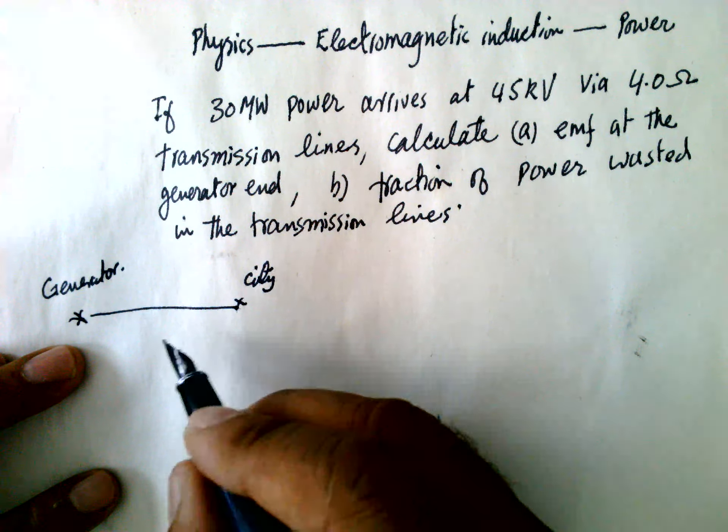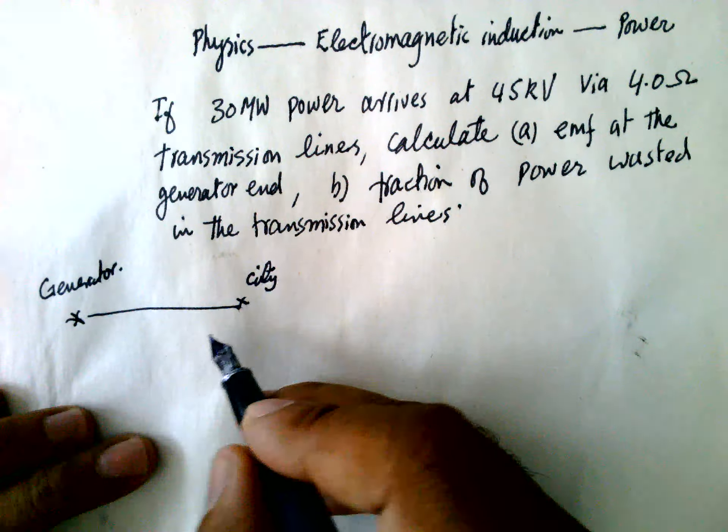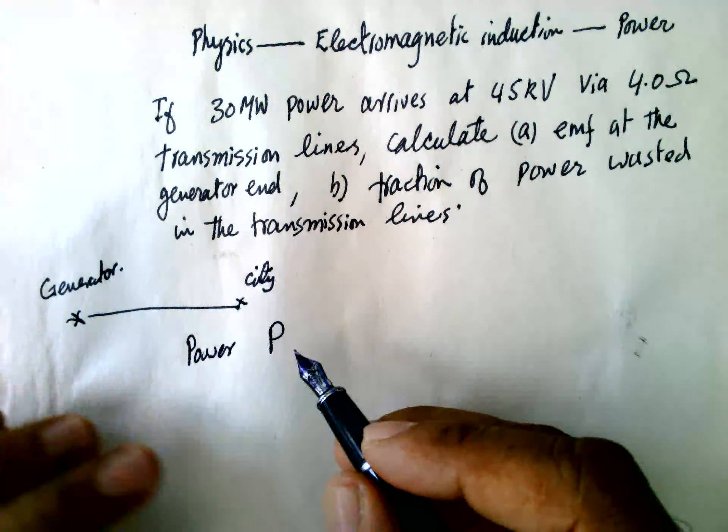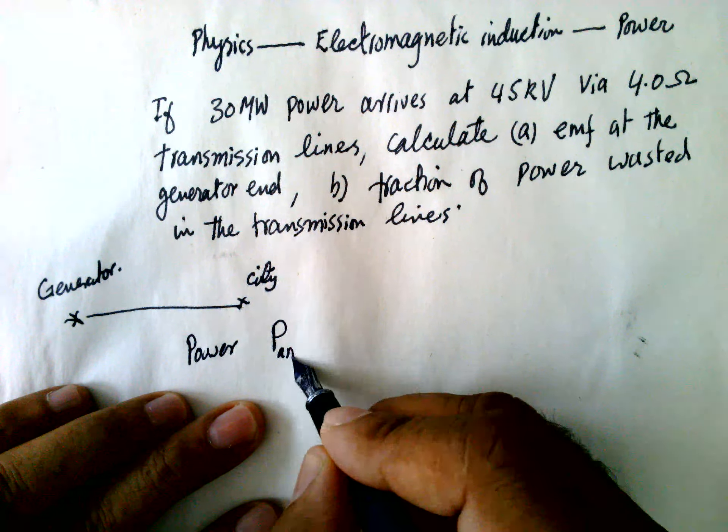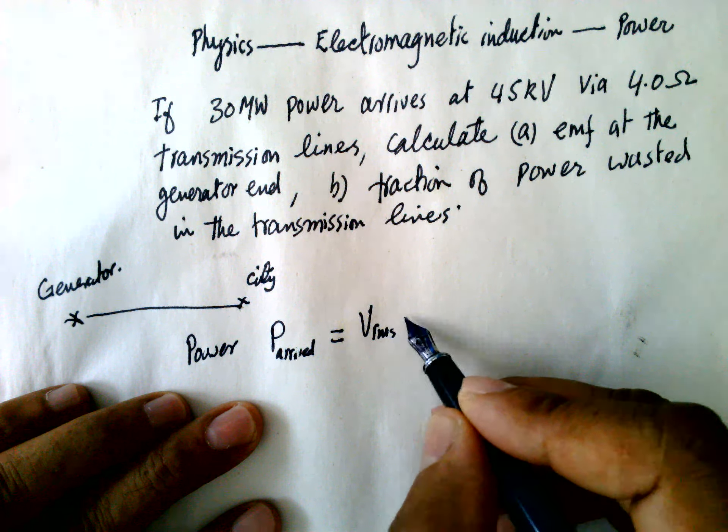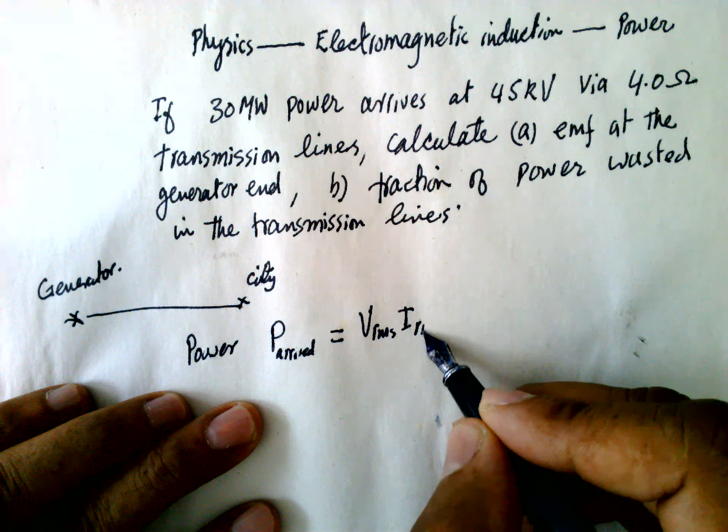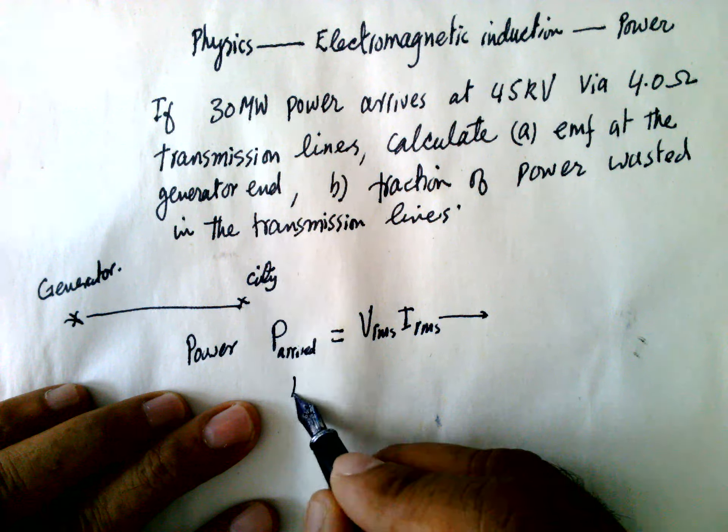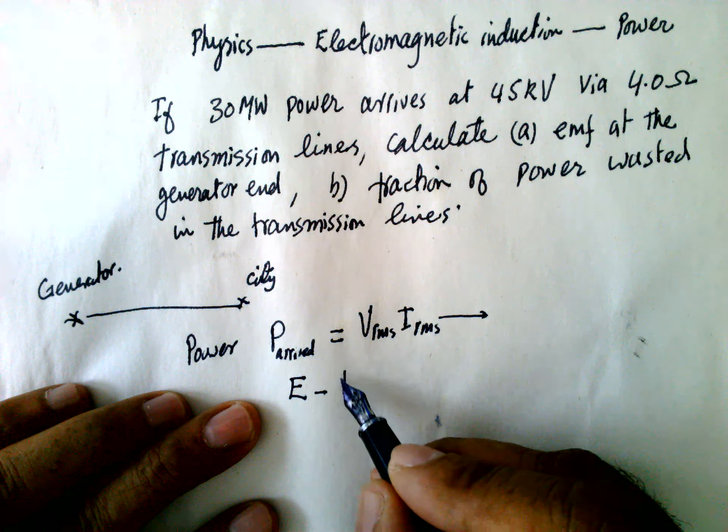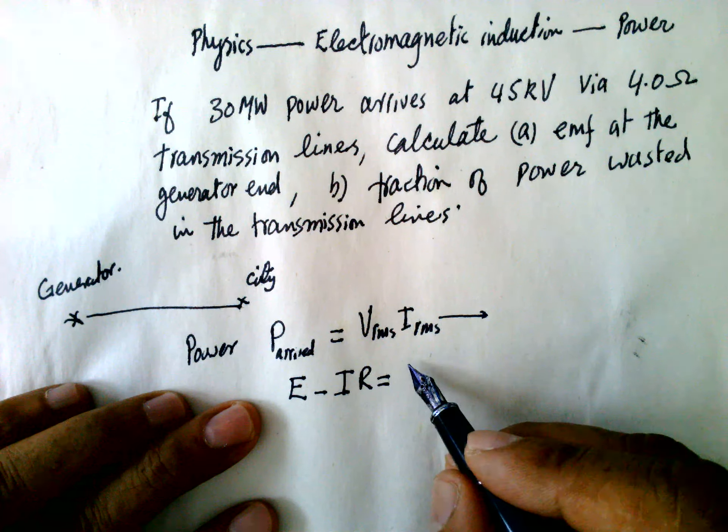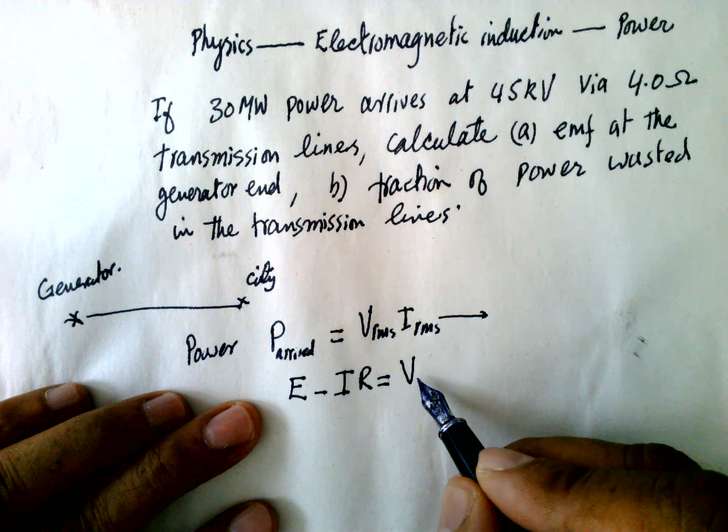So first of all we have to find the EMF. For EMF, what we know is that the power P which arrives is equal to V_rms times I_rms. And also EMF minus IR is equal to the voltage output.